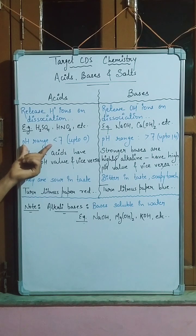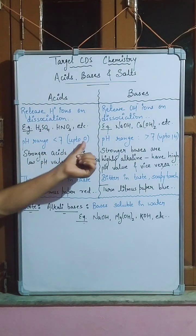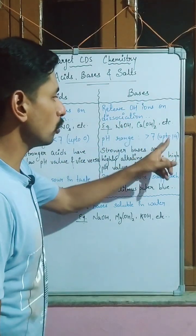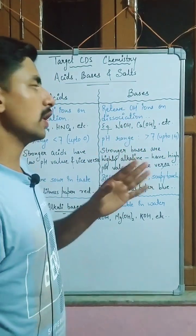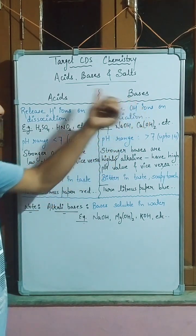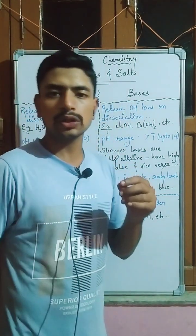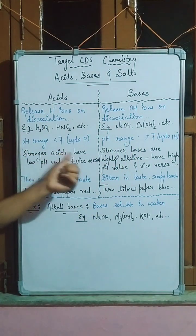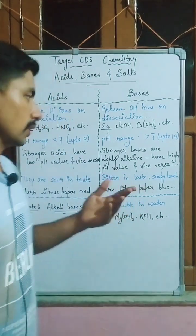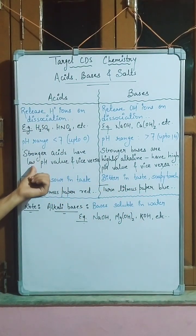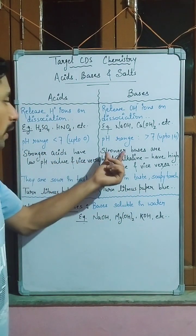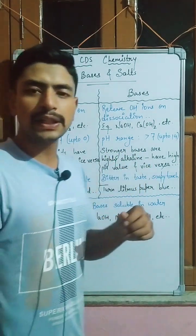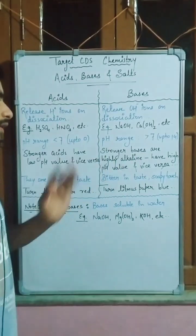If we talk about pH, the pH of an acid is less than 7, with a minimum of 0. The pH of a base is greater than 7, with a maximum of 14. pH 7 is neutral, which corresponds to salts. Stronger bases have a very high pH value and are considered highly alkaline in nature, and vice versa.